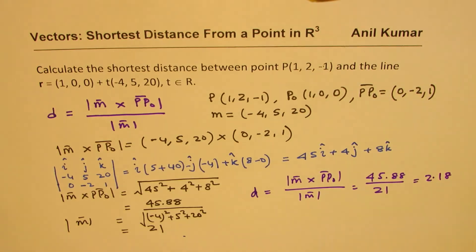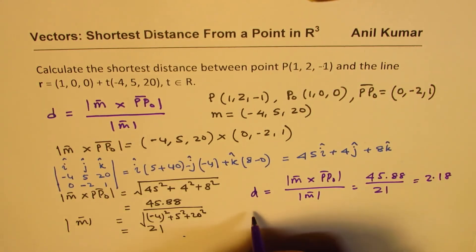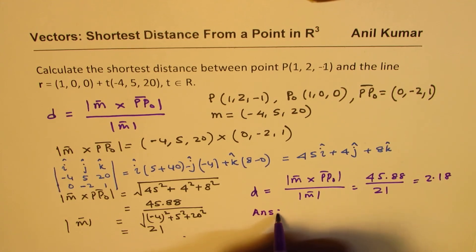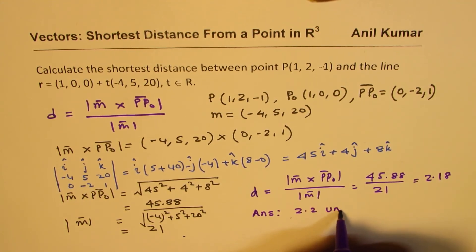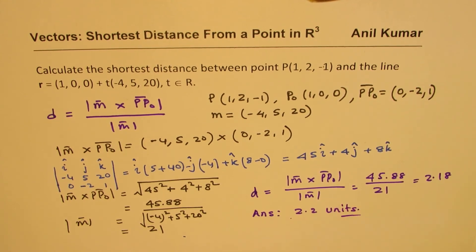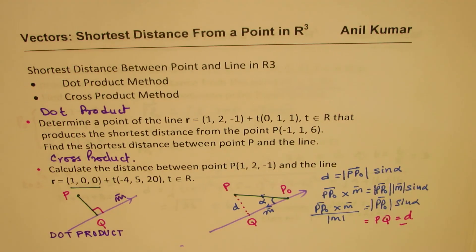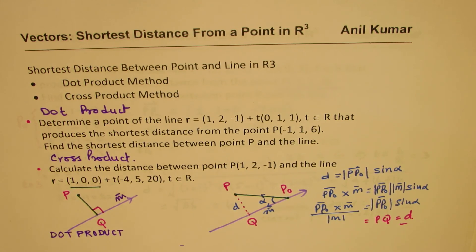So the minimum distance is approximately 2.2 units. That is how you can use the cross product to find the answer. I hope both methods are absolutely clear. Feel free to write your comments, share your views, and share my videos with your friends. If you have questions, write them in the comments. Thanks for watching and all the best.